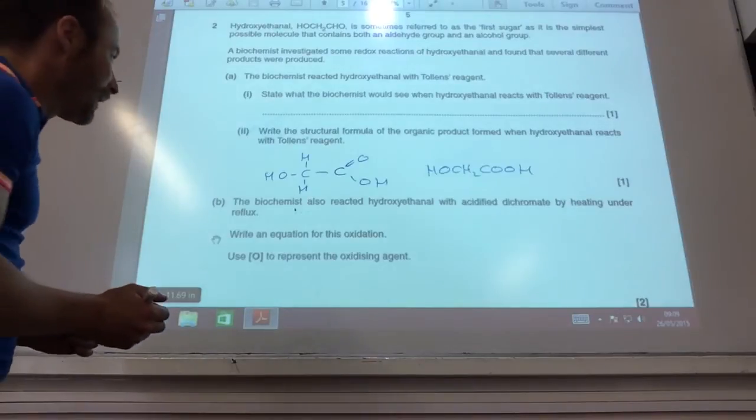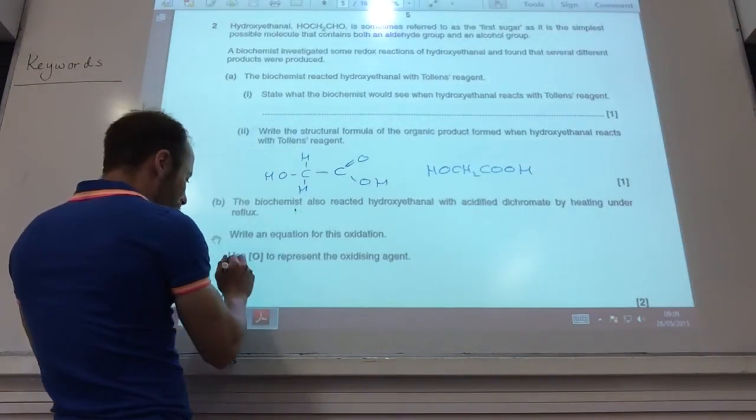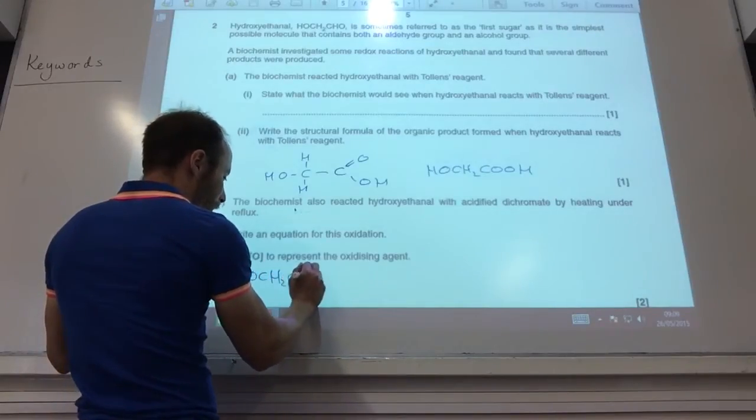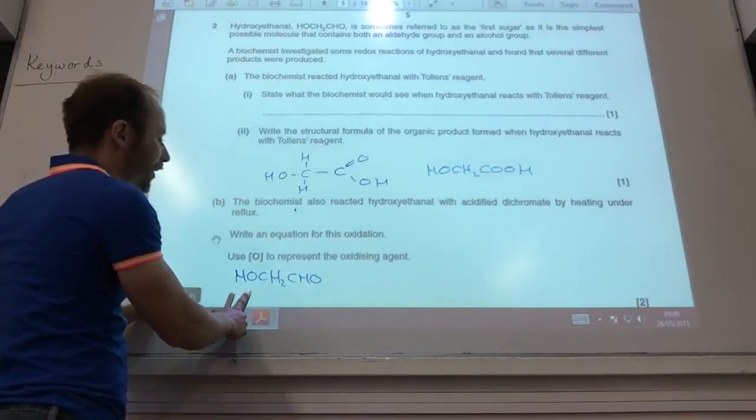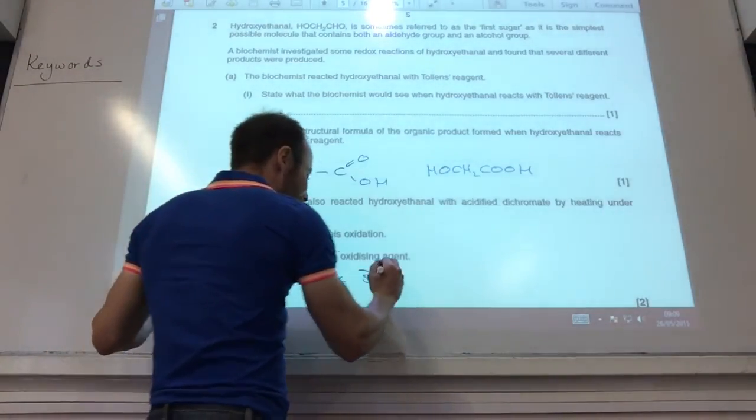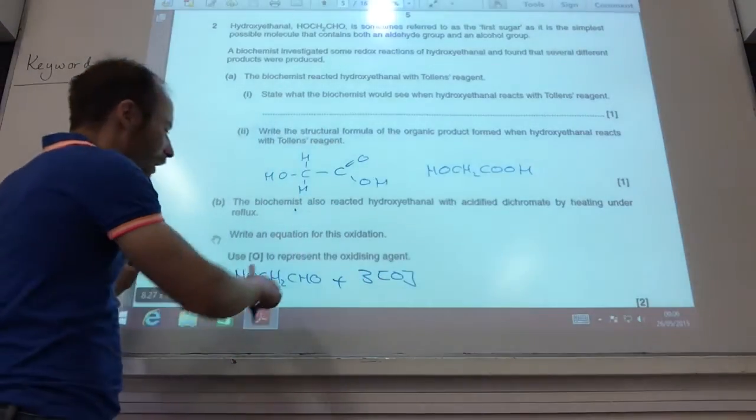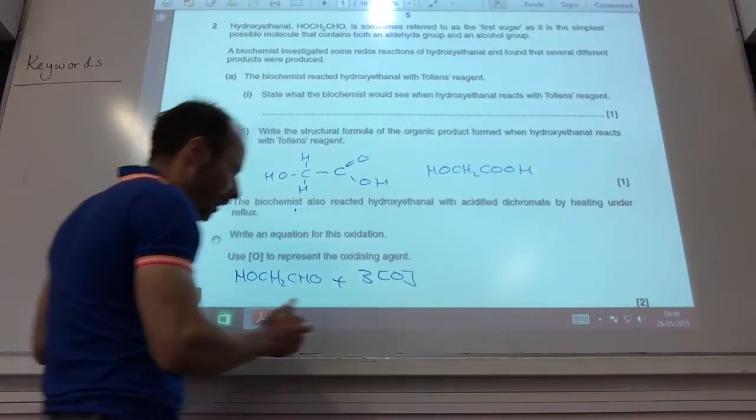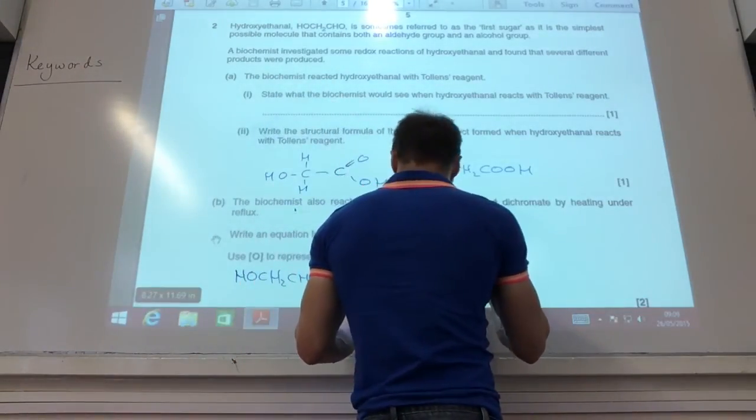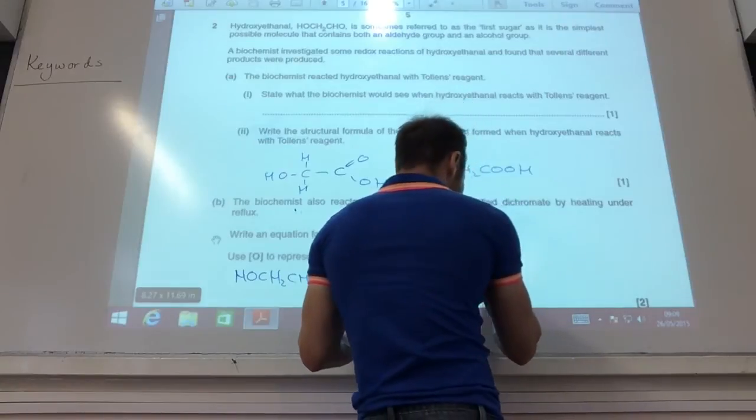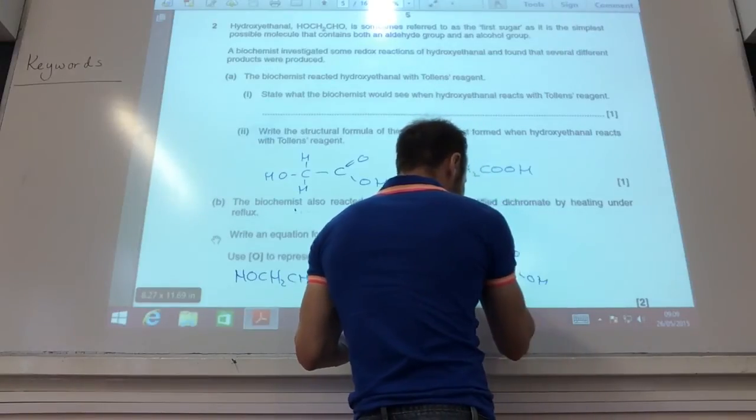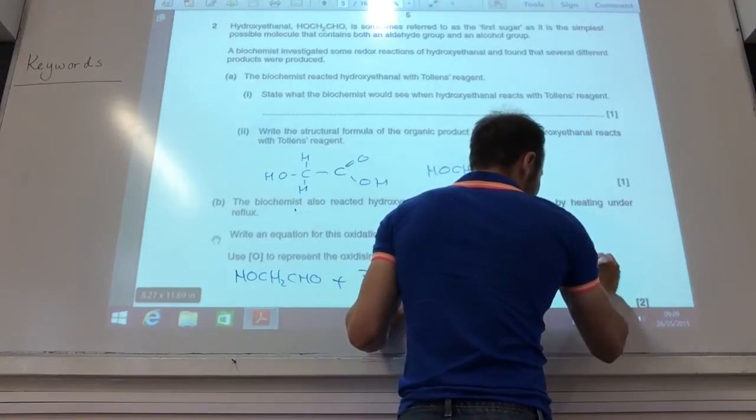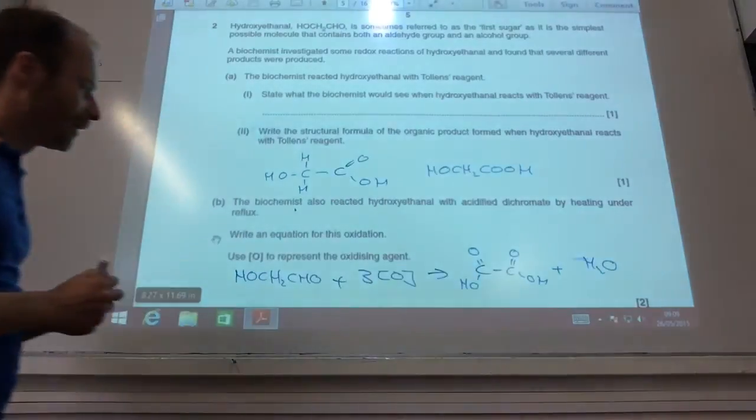Oxidize with acidified dichromate. Write an equation for that. So let's have a look. That's my hydroxyethanal, I need three O's. The reason why, the aldehyde is going to become a carboxylic acid, and the alcohol is also going to become a carboxylic acid, for which I need two. It's going to give me my di-carboxylic acid like so, and it's also going to give me water as well.